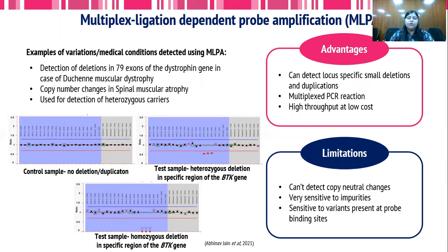MLPA is also very sensitive to impurities — if there is a little bit of control DNA contamination in the test sample or vice versa, that would lead to aberrant results. Additionally, it is very sensitive to variants present at the probe binding site, which could affect the outcome.